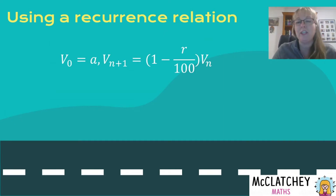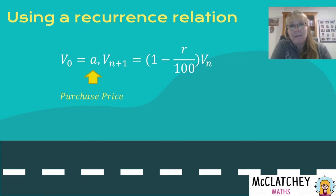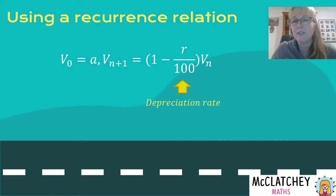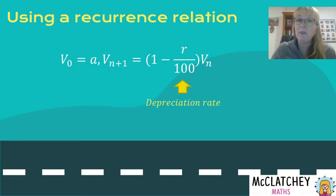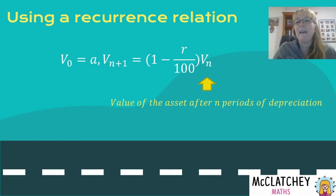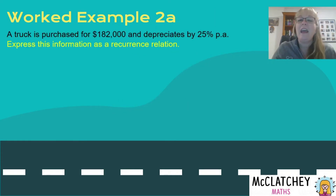Now let's talk about the recurrence relation. Recurrence relations have three parts: first, your purchase price — the amount at time zero, V0. Second, your depreciation rate, calculated as one minus the depreciation rate as a decimal. So if it's 3%, it's 1 − 0.03, not 1 minus 3. The subtraction is used because this is a model of decline — if I used addition, I'd be modelling appreciation or growth.